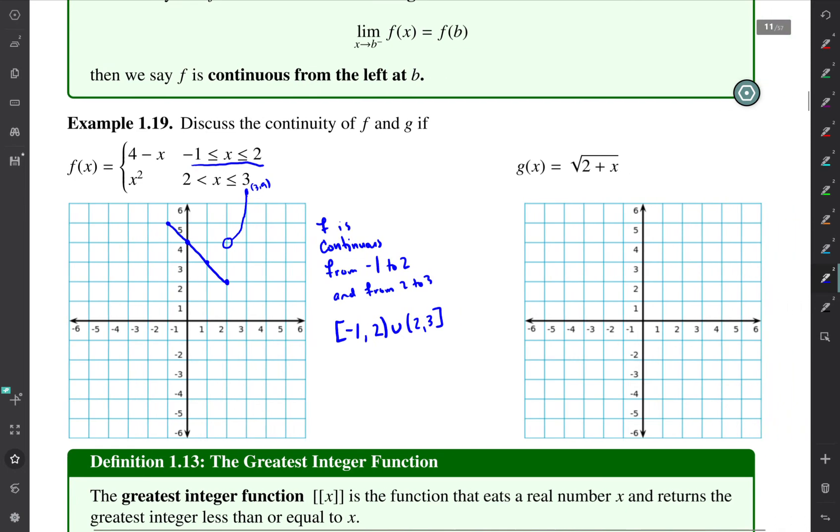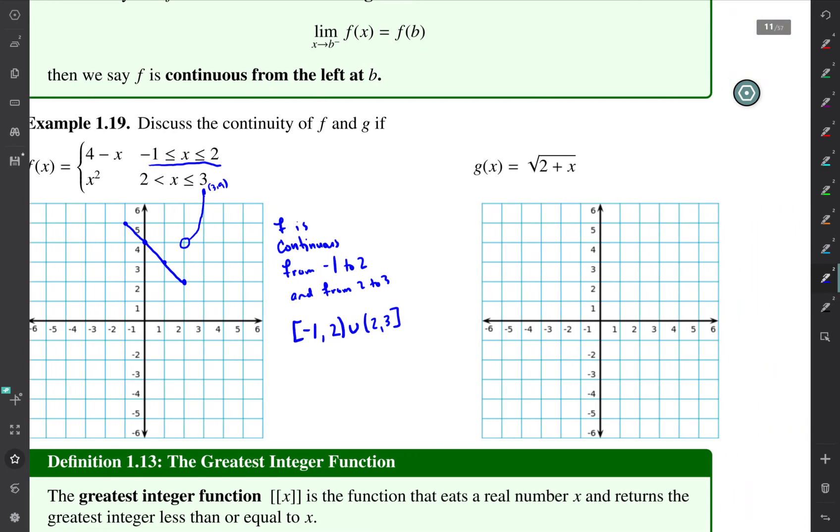Okay, so let's look at g. g is the function y equals the square root of 2 plus x, and so that's going to be a parabola turned on its side and it's going to go through the point 0, 0. If I plug in negative 1, I'll get positive 1. If I plug in 2, I get square root of 4 is 2. Okay, so it looks something like this.